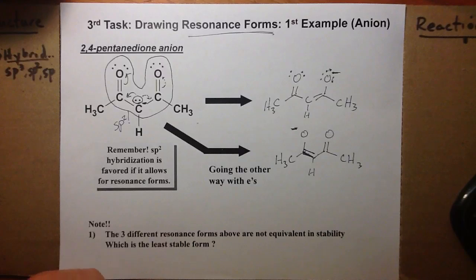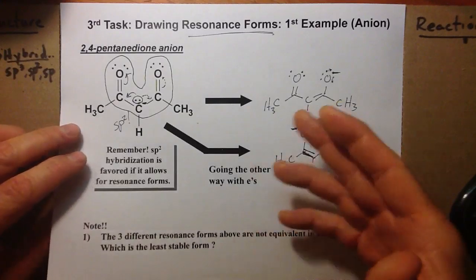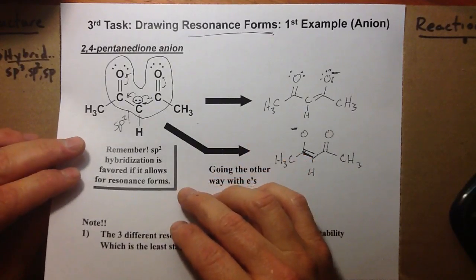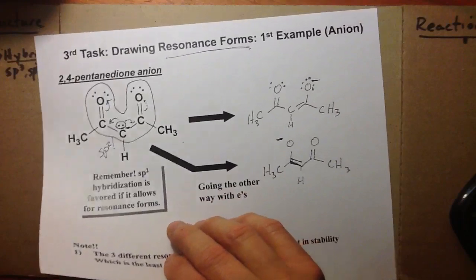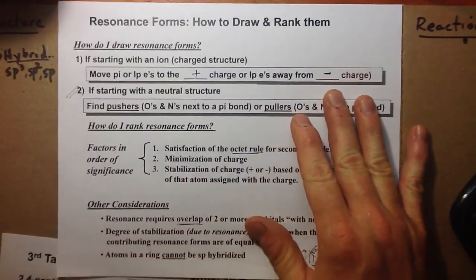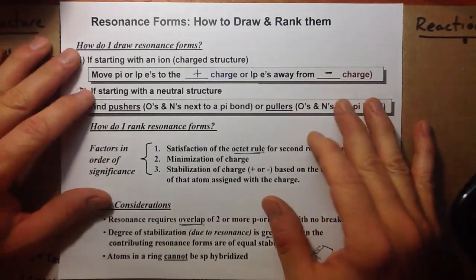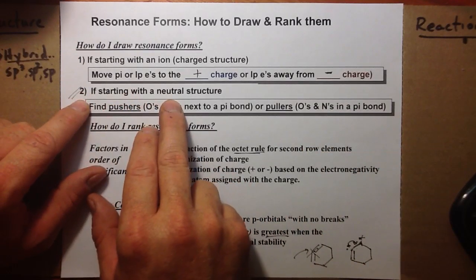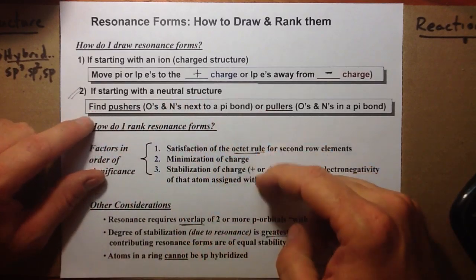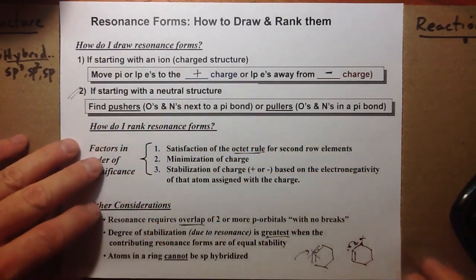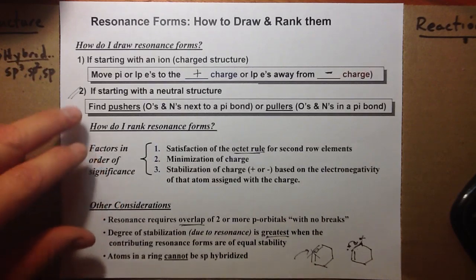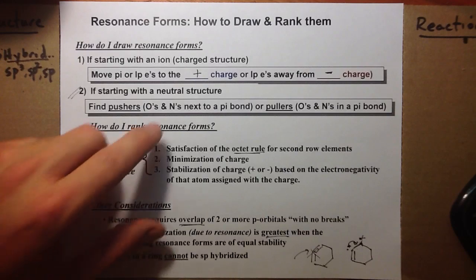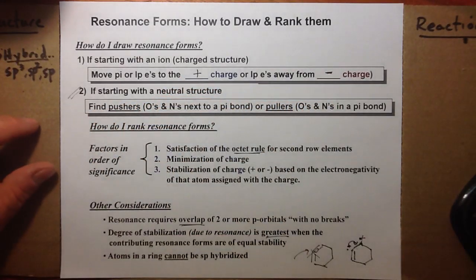Well, that's it. That gets us started in discussion of resonance forms for cations and anions. In the next presentation, we'll be looking at neutral structures and applying these same rules, how to draw resonance forms for molecules or ions. We'll be jumping, though, to this second consideration, pushers and pullers. Still can use these factors that influence the amount of contribution of each resonance form. But neutral structures are a little more difficult. You don't have an obvious starting point with a positive or negative charge drawn. Bye-bye.